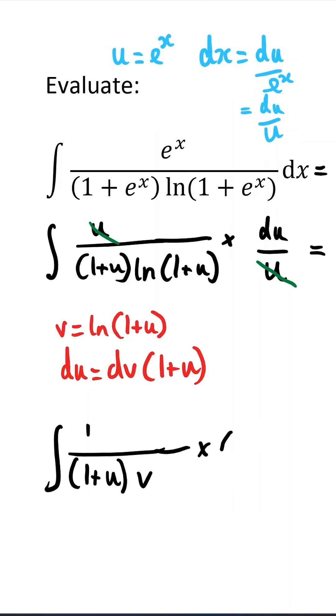And that's all times by (1 plus u) times dv. Again, this 1 plus u cancels.